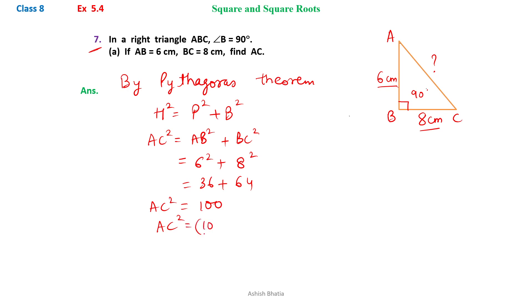100 is 10 square, so we can find that AC equals to 10 cm. So the required side is 10 cm.